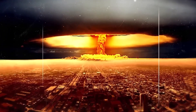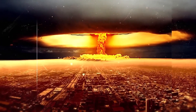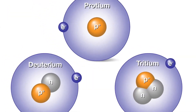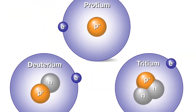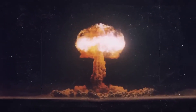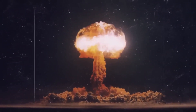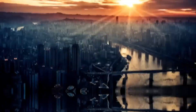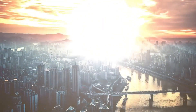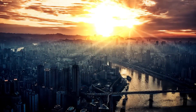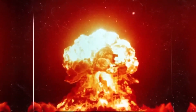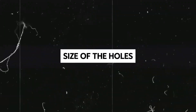Conversely, hydrogen bombs employ isotopes of hydrogen — particularly deuterium and tritium — as their primary fuel sources. These isotopes undergo nuclear fusion when subjected to extreme temperatures and pressures, mimicking the process that powers the sun and other stars. The fusion reactions release vast amounts of energy, dwarfing the destructive power of atomic bombs by several orders of magnitude.